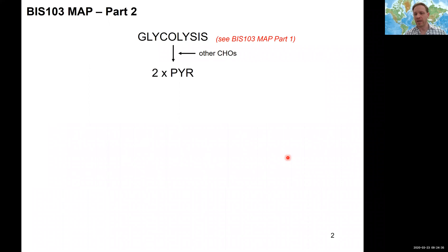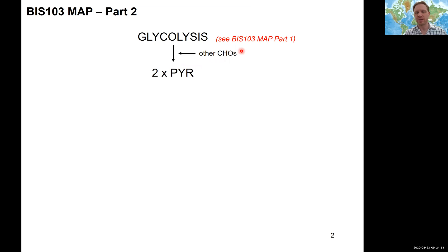What we had discussed over the last lectures and covered in part 1 of the map was our pathway of glycolysis — how we can break down glucose to two molecules of pyruvate to start generating ATP. We had also discussed how we can use other sugars and how they can feed into this pathway.